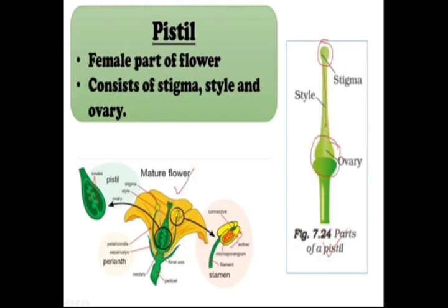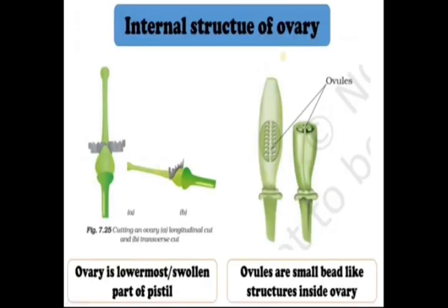Look at here — you can see style and stigma. This is petals, and this is ovary. Inside the ovary you can see ovules. This is style, this is stigma, and this is ovary. Inside you can see ovules. This is anther, and the portion below it is the filament. These are the parts of the flower.